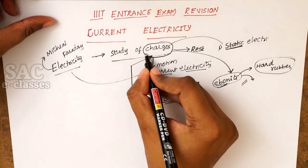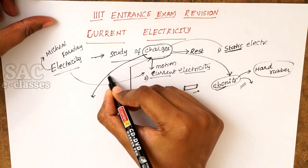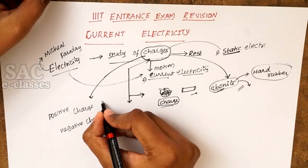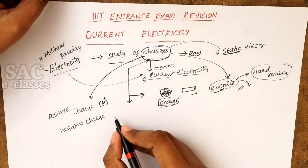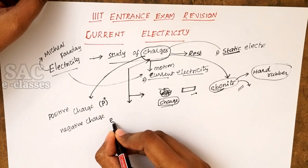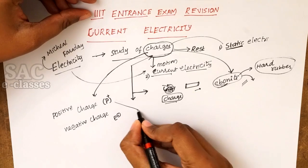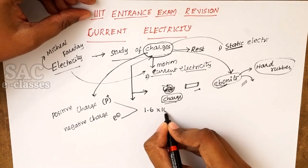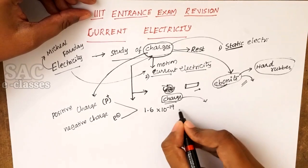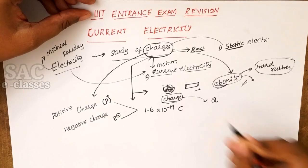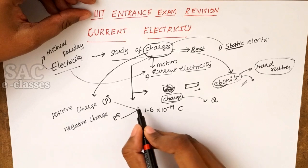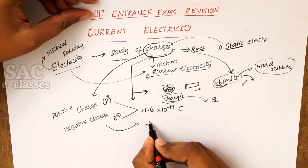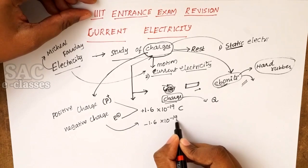Charges are of two types: positive charge and negative charge. The particle carrying a positive charge is the proton, and the particle carrying a negative charge is the electron. Both are similar in their magnitude — both have a charge of 1.6 × 10⁻¹⁹. Charge is measured in coulombs and represented by the symbol Q. The charge of a proton is +1.6 × 10⁻¹⁹ C, and an electron is −1.6 × 10⁻¹⁹ C.